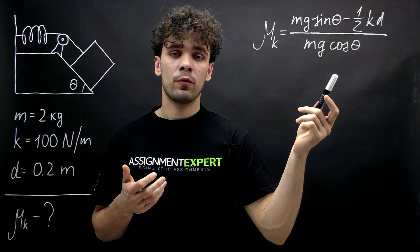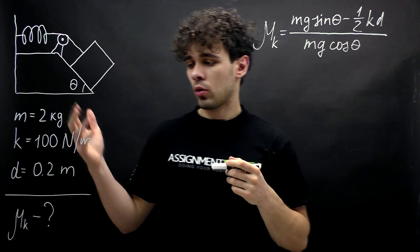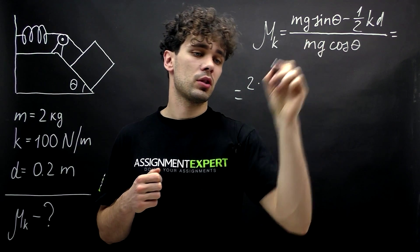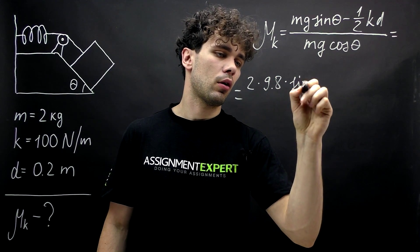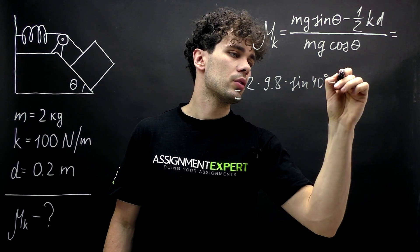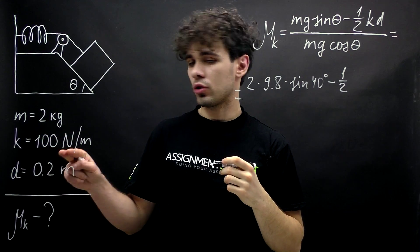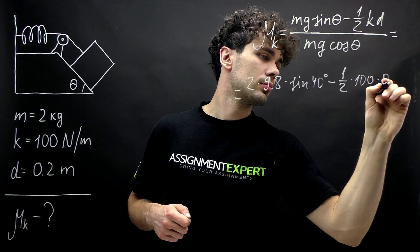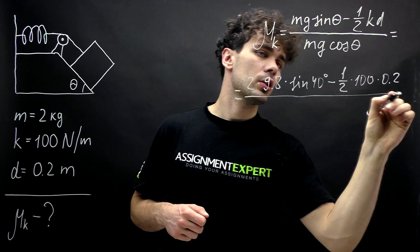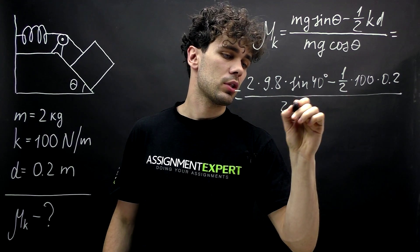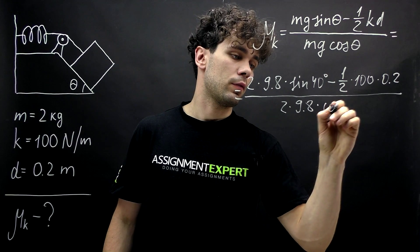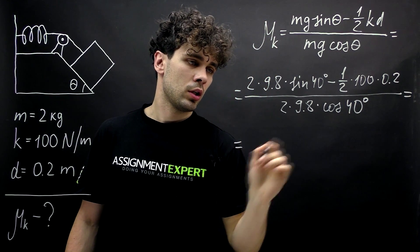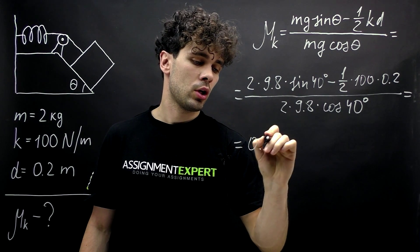Here's our formula for the coefficient of kinetic friction. Let's put in all our variables: in the numerator we have m = 2 kg times 9.8 times sine of 40 degrees, minus one half times k which is 100, times d which is 0.2. In the denominator we have 2 kg times 9.8 times cosine of 40 degrees. All the operations give us 0.173.